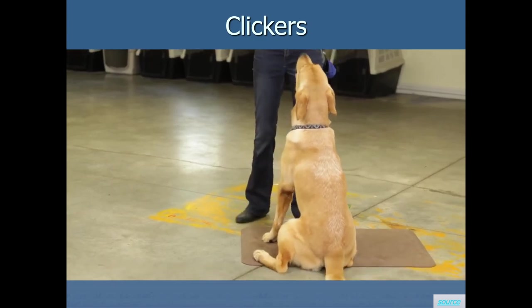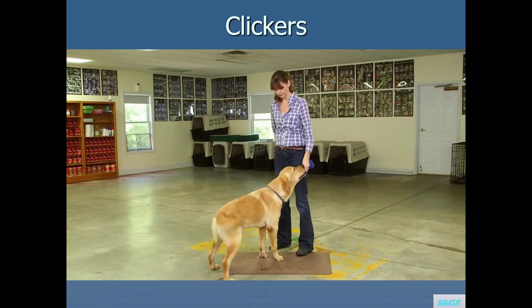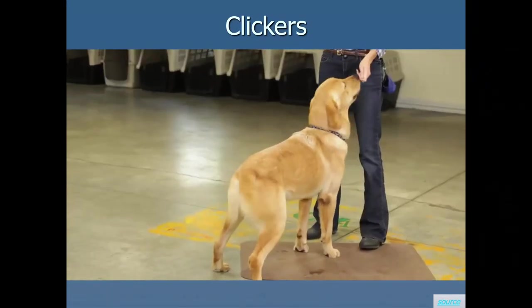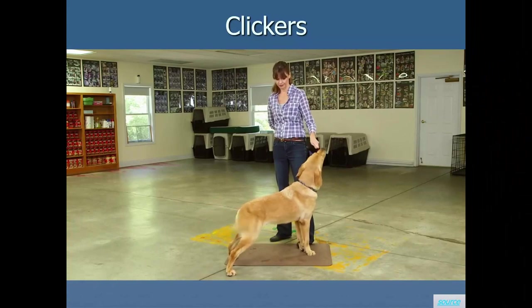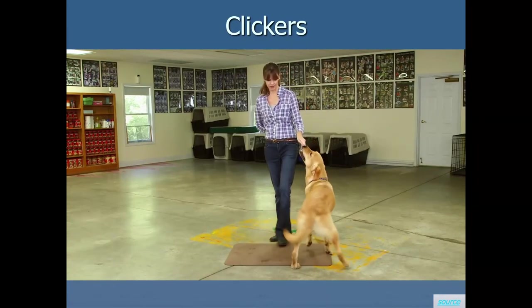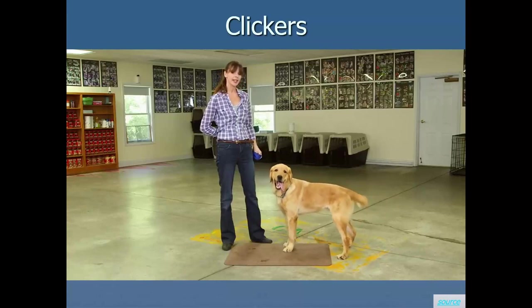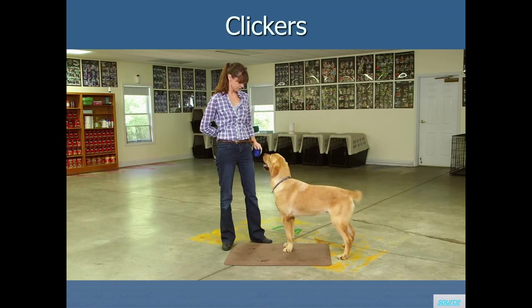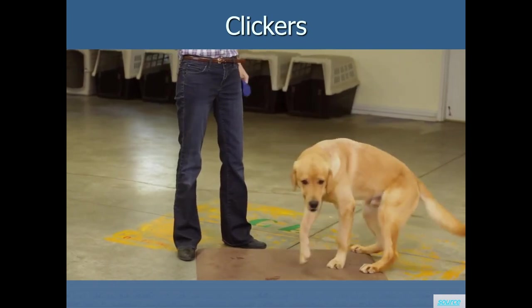Once your dog has made the association between the sound and reward, you can begin teaching different action cues using the clicker. In the video example, the trainer waits for the dog to put his bottom on the ground — when he does, she clicks and gives the treat. So not only is she training a sit behavior, but she's doing respondent conditioning to make the clicker itself a reinforcer. That click sound happens before the treat goes in his mouth, so the dog starts liking the click sound as well.